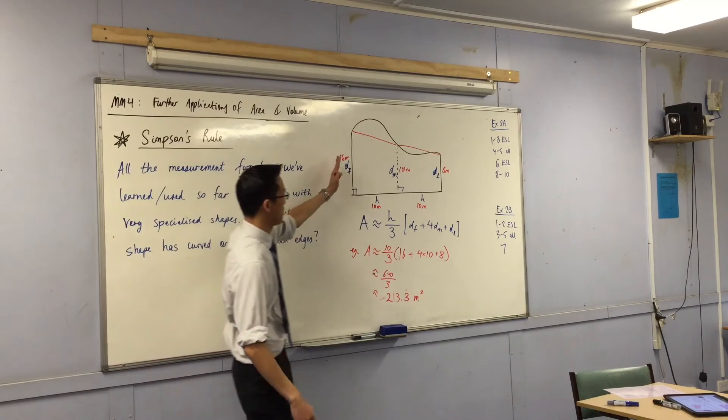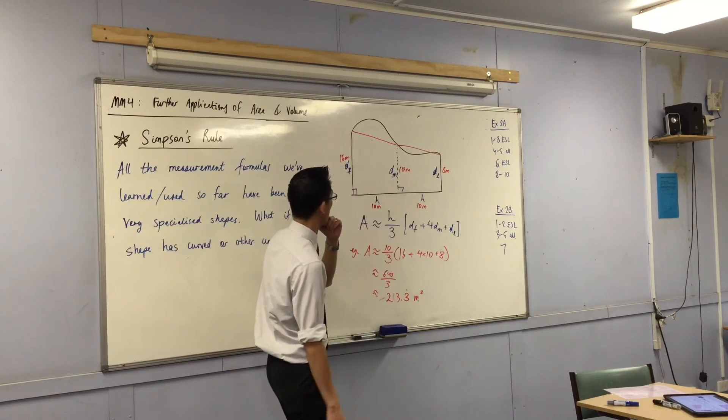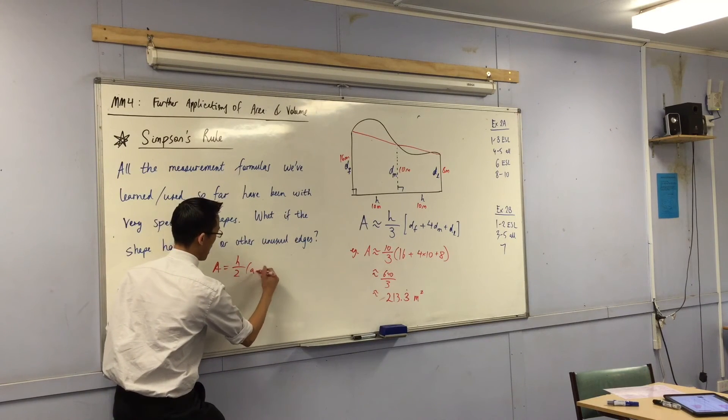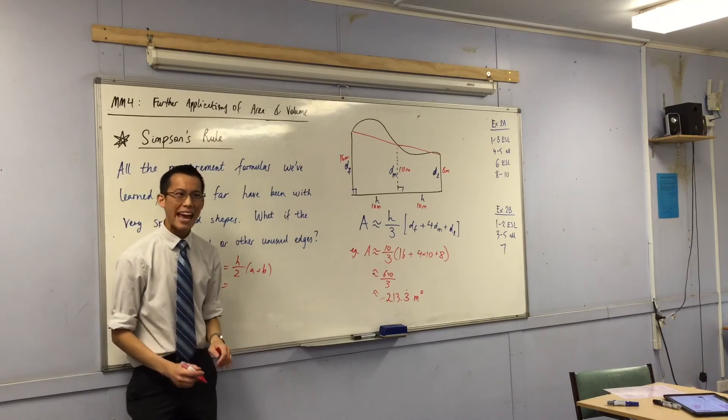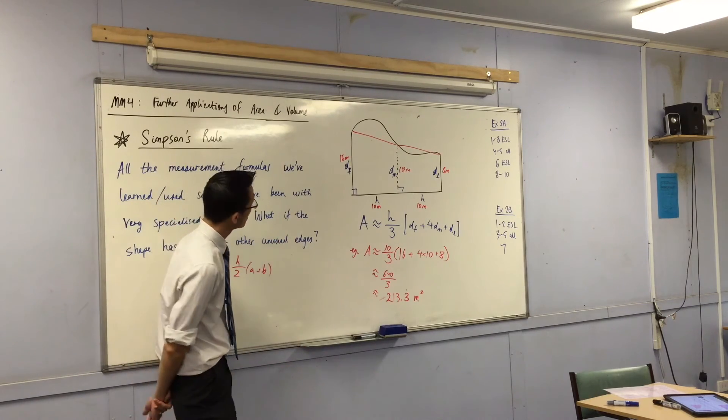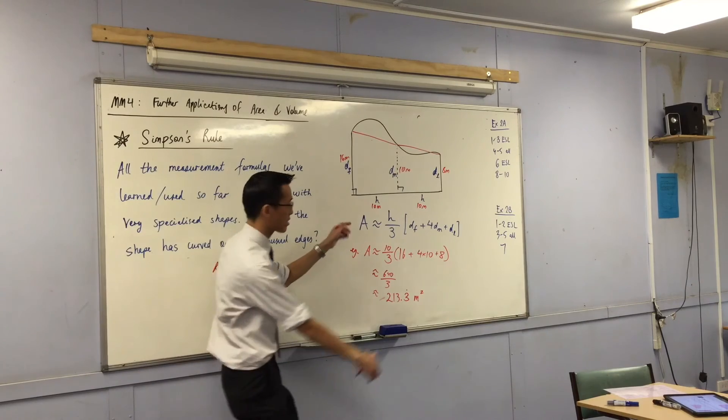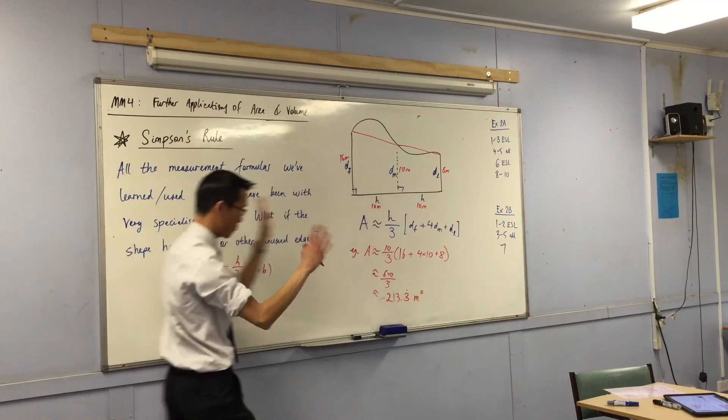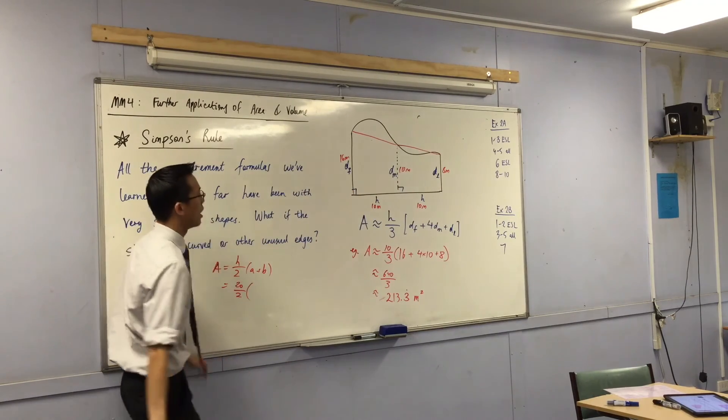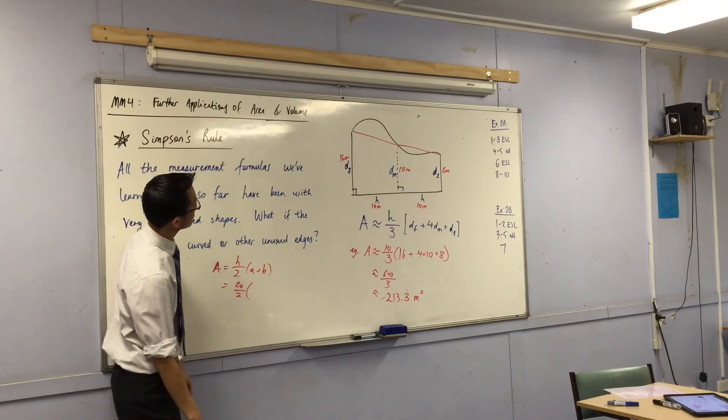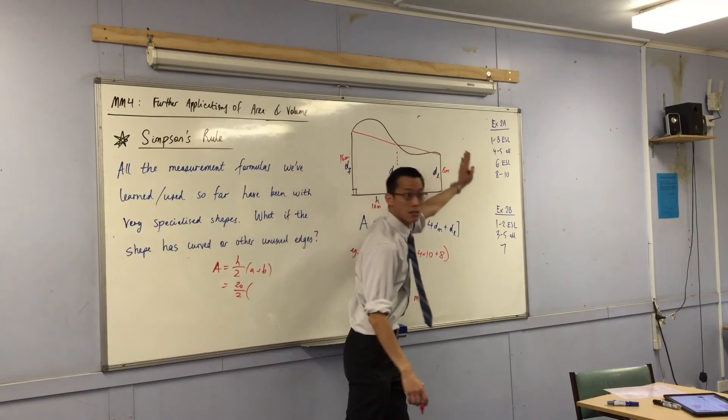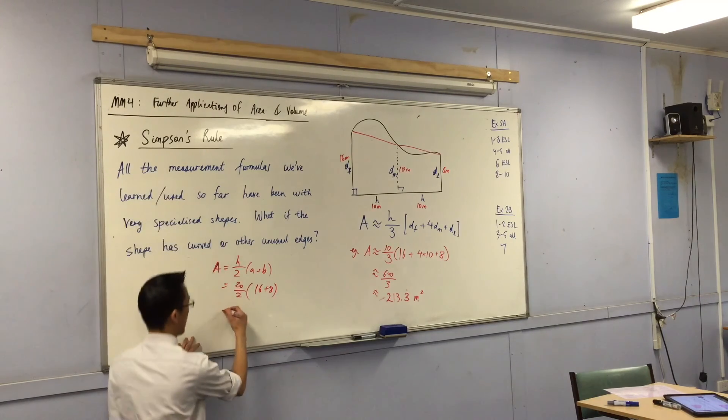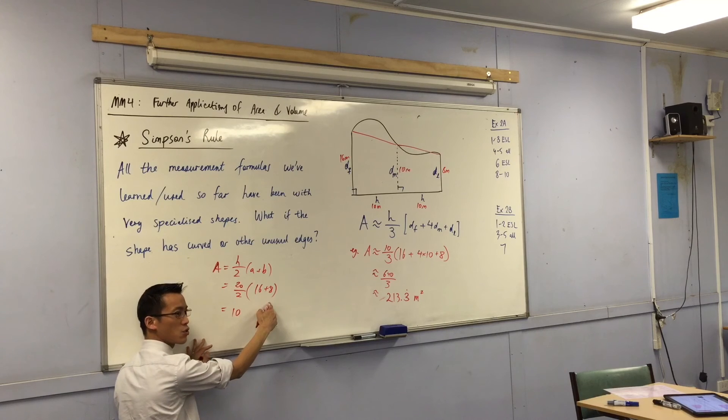So, I know the area of a trapezium. The area of a trapezium is h on 2, a plus b. What's the h in this case? It's the height of the trapezium. So, in this case, the height of the whole trapezium would be 20. Do you see that? I'm just trying to get this approximate. What are the a and b? Yeah, it's the parallel sides. Do you agree with that? So, 16 plus 8. This is 10. 16 plus 8 is 24.